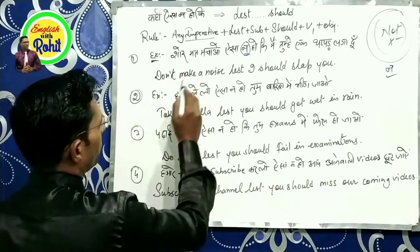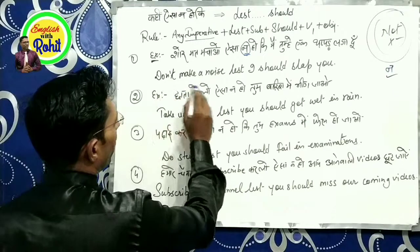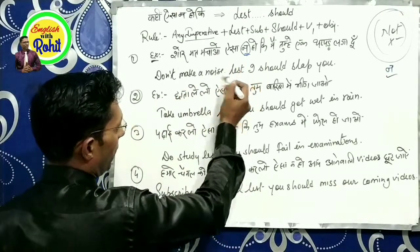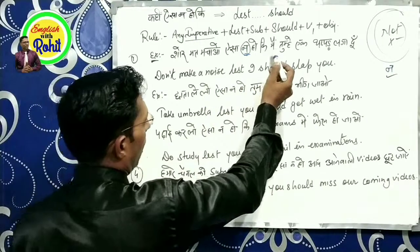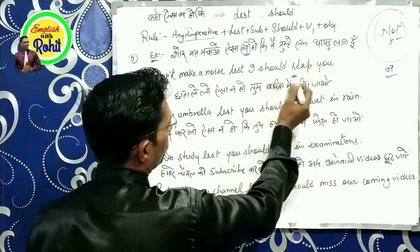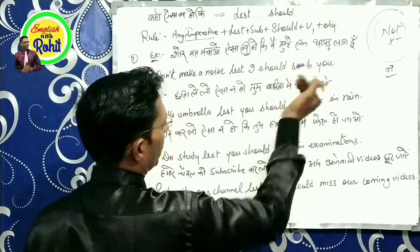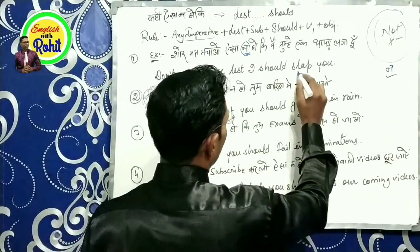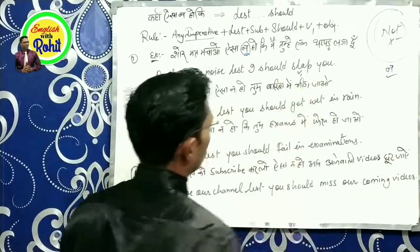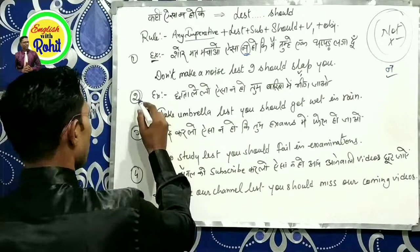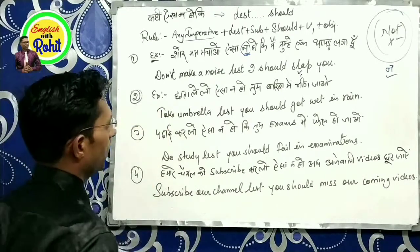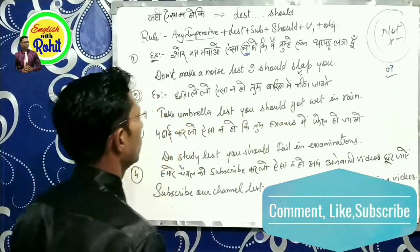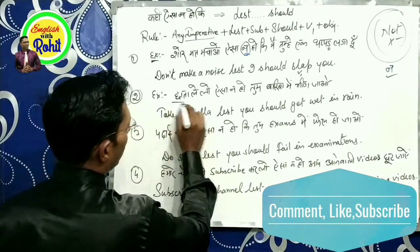Sentence बनाते हैं: शोर मत मचाओ — 'Don't make a noise' — ये एक imperative sentence हो गया। ऐसा ना हो कि — lest I should slap you — मैं तुम्हें एक थपड़ लगा दूं।